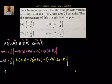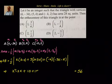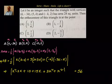Expanding and simplifying: 56 = k(k - 2) + 5(2 + 3k) + 3k² + k², which gives us 5k² + 13k + 10 inside the absolute value, equal to 56.